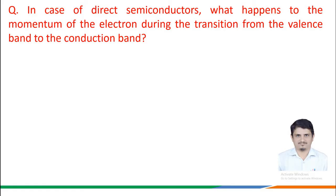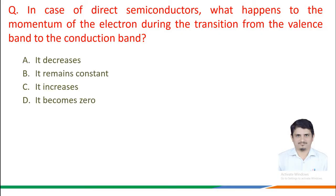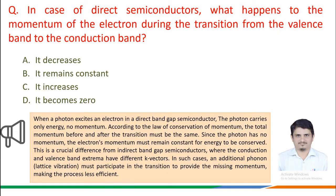In the case of direct semiconductors, what happens to the momentum of the electron during the transition from the valence band to the conduction band? When a photon excites an electron in a direct band gap semiconductor, the photon carries only energy and not momentum. According to the law of conservation of momentum, the total momentum before and after the transition must be the same.